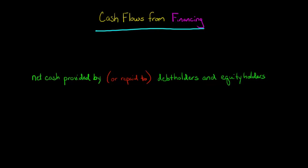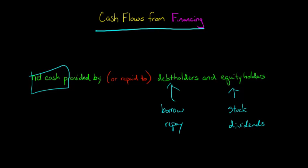So cash flows from financing activities are basically the net cash that is provided or used up by debt holders and equity holders. When we talk about debt holders, we're talking about when you borrow money or when you repay money. That's going to end up in this financing section, but not just the dealings with your creditors, but also your equity holders as well. So if you issue stock or if you pay dividends to your shareholders, those activities are going to end up in this financing section as well.